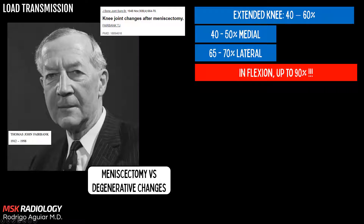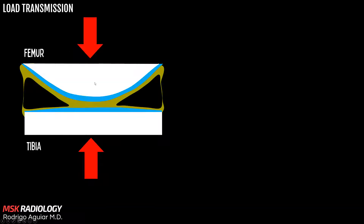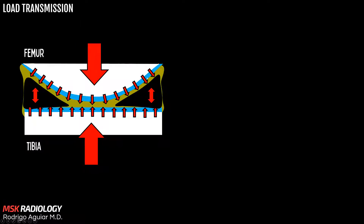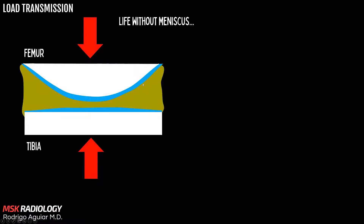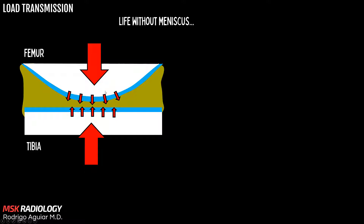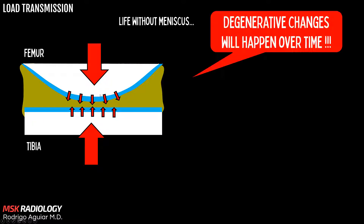So how does the meniscus execute this function? Here we have a representation of the knee joint with the femur, tibia, articular cartilage, and meniscus. When we are in a weight-bearing position, a significant part of the load passes through the meniscus and is distributed evenly on the articular cartilage surface. In a patient with an insufficient meniscus or without a meniscus, all the load gets concentrated in a much smaller area, stressing and damaging the articular cartilage and subchondral bone, and the degenerative changes will happen over time.